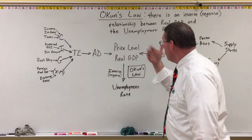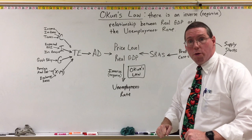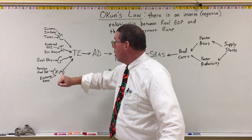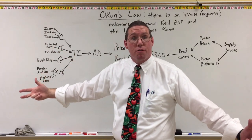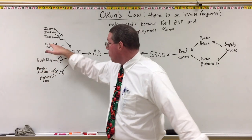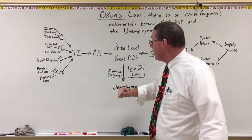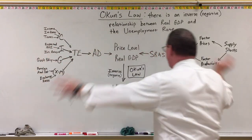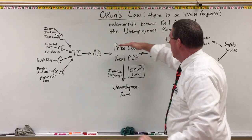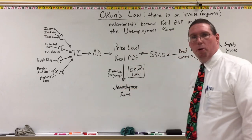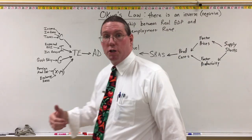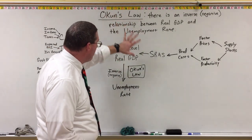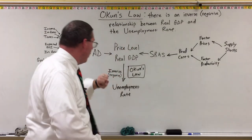Now you can see that since we want to understand and manage our three economic goals, we care about all these things: government policy, how other countries are doing, the expected return on investment — which is basically the confidence of business leaders — income in the economy, interest rates, and taxes. We care about all of this because it all affects the aggregate market, the stability of our price level, our economic growth, and full employment in the economy. This is the ultimate picture of everything we want to be concerned about in this principles of macroeconomics class, and Okun's Law gives us our final piece of how all these things affect our third macroeconomic goal.